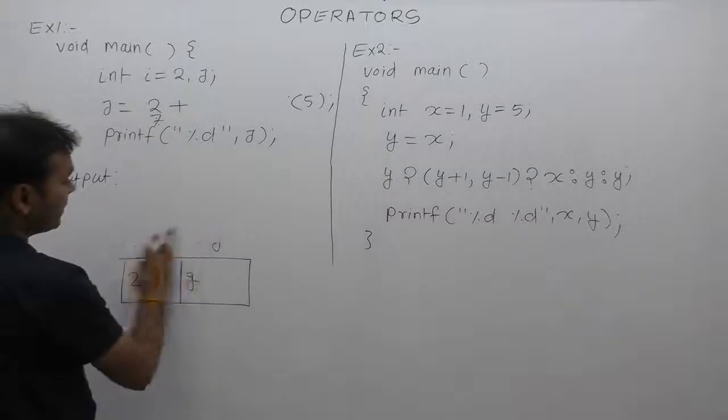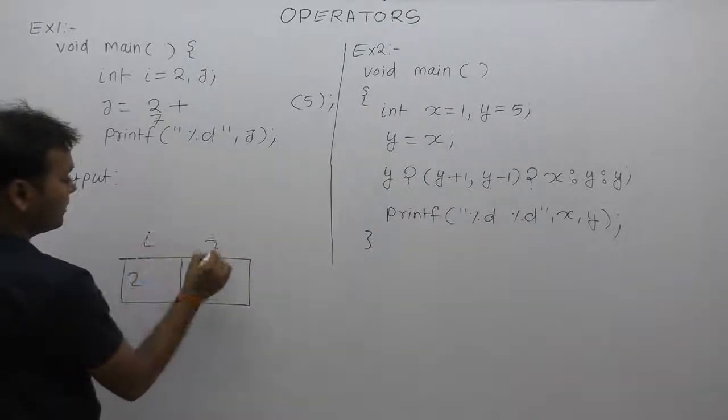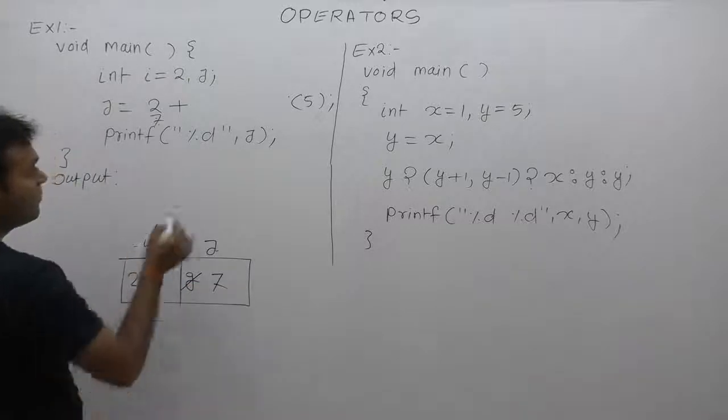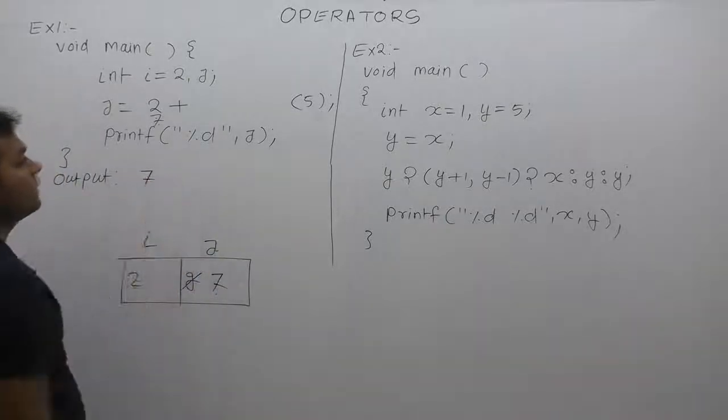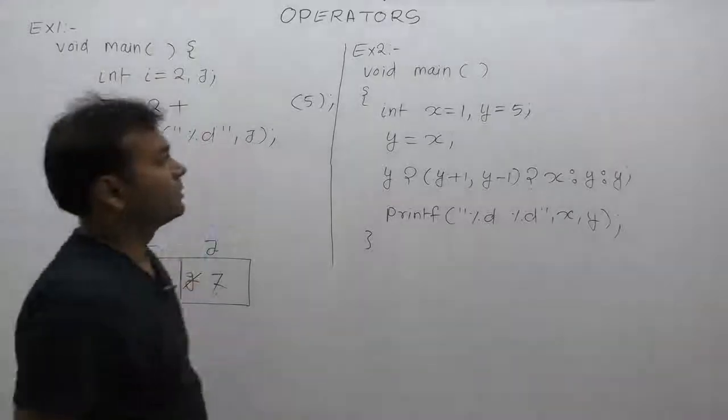Variable names are i j not x y j. Value of j becomes 7. This is the final value of j is 7. Therefore, output is also 7. 7 got printed from here. Next one,